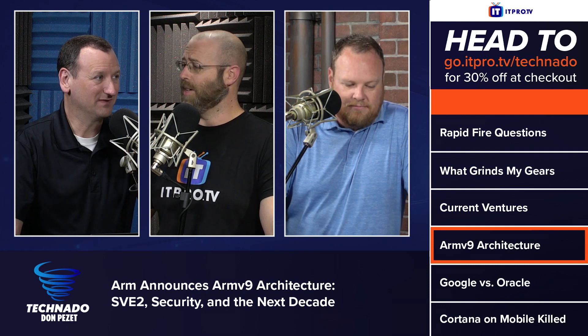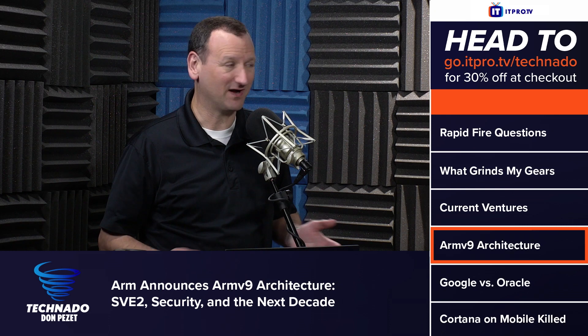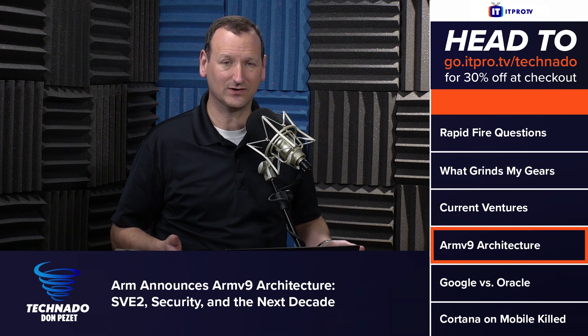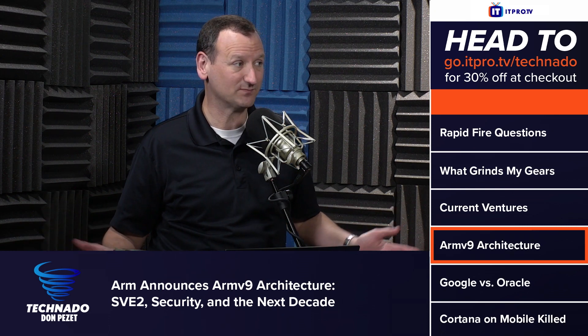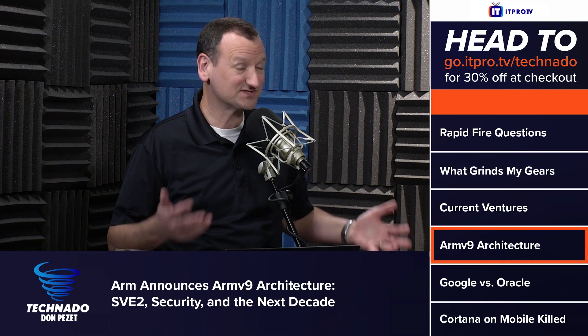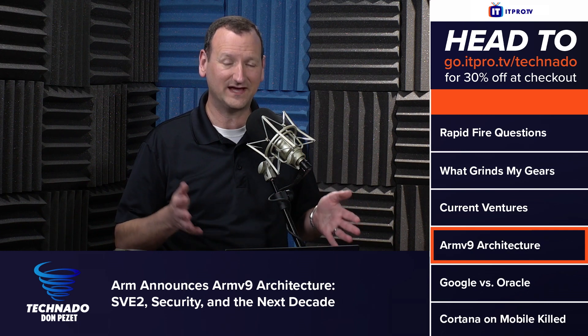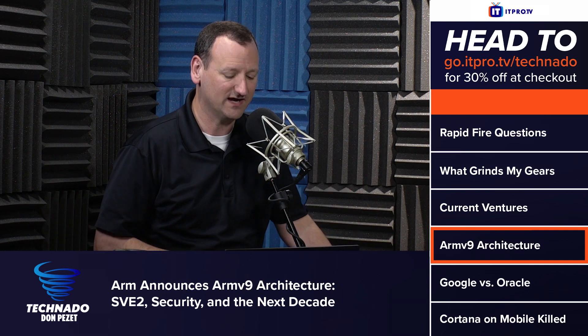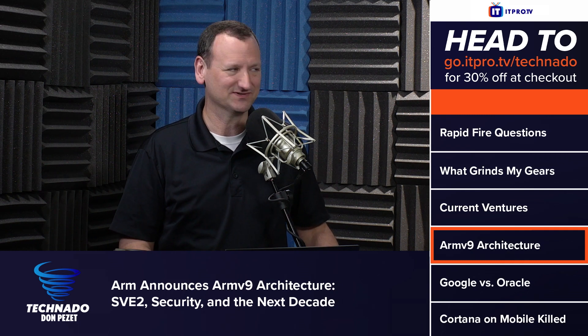It's been about 10 years since ARM v8 came out. If you buy an ARM-enabled device these days — whether it's a cell phone, a Raspberry Pi, or whatever — it likely has an ARM v8 chip in it. Although ARM v7 is still actively supported, as technologies evolve they move on, and ARM has announced the next iteration: ARM v9.